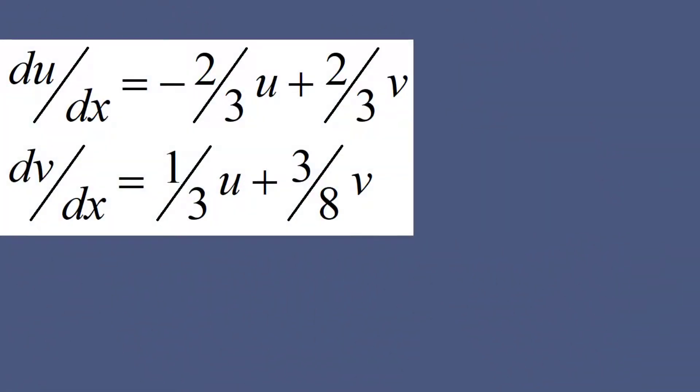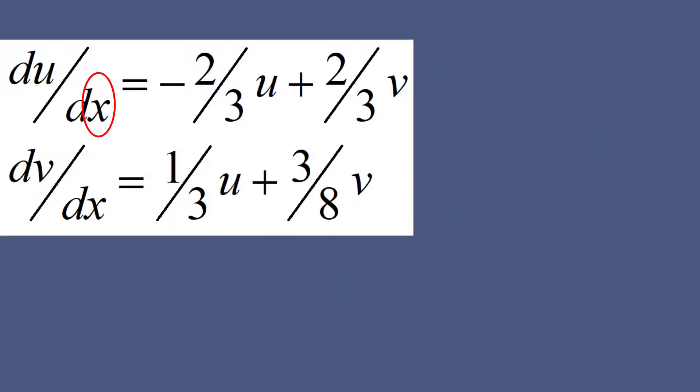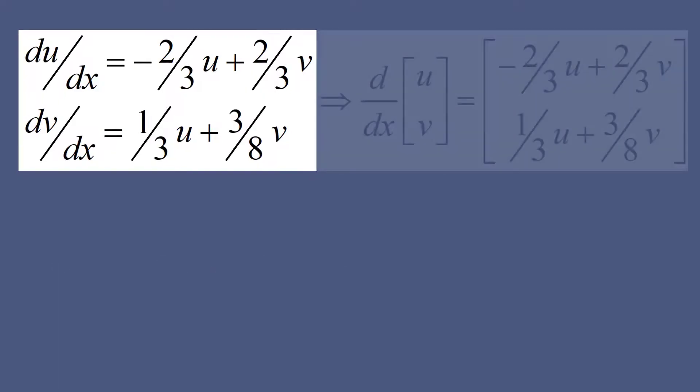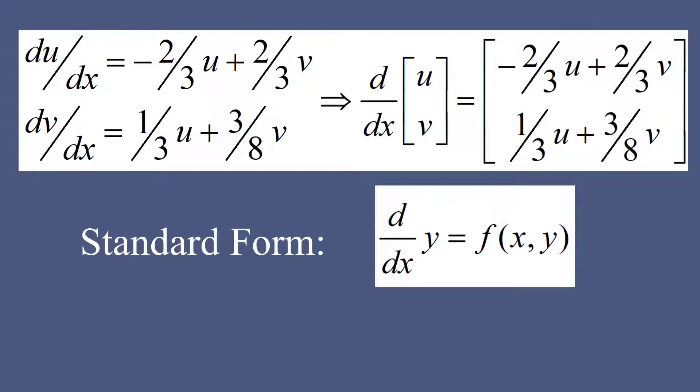Now let's solve a system of first order differential equations. This is the system of equations. Here the independent variable is x not t. So my equations should be in this standard form. Now I extract out d over dx. Obviously here y is the vector of unknown variables, u and v. And now my equation is in the standard form.